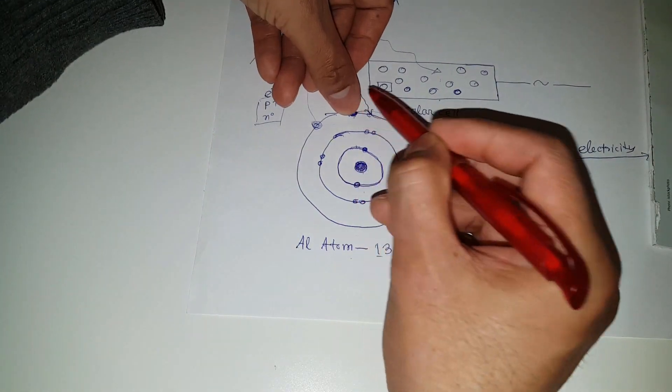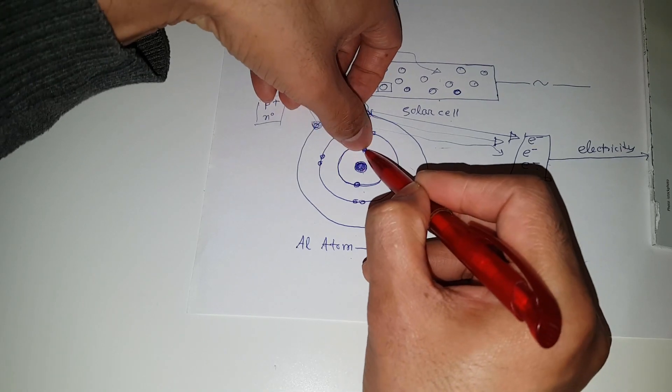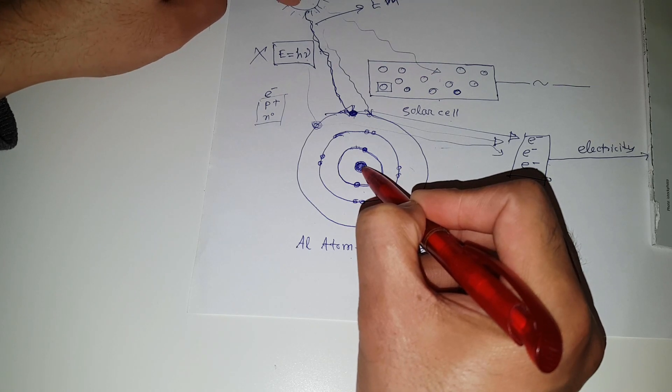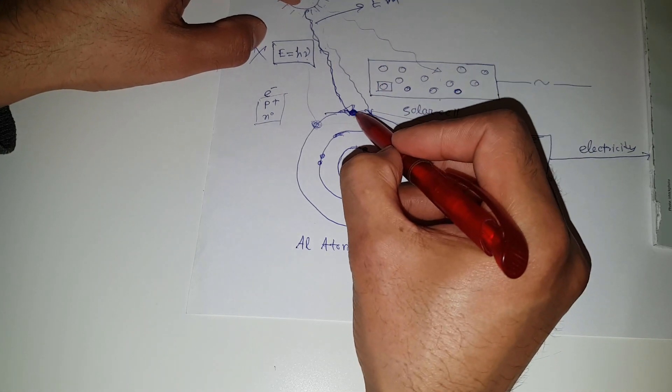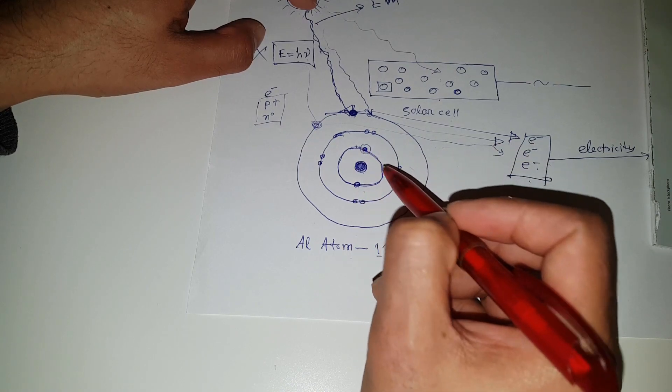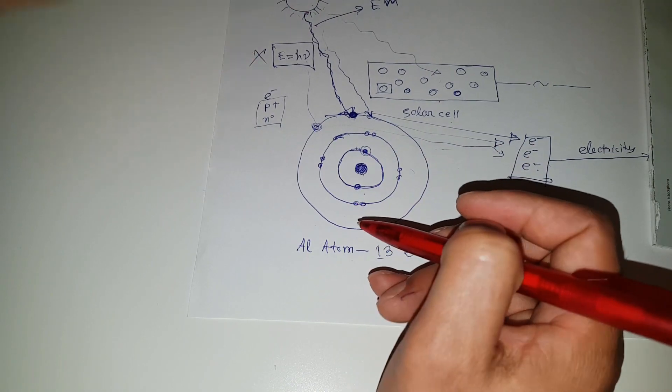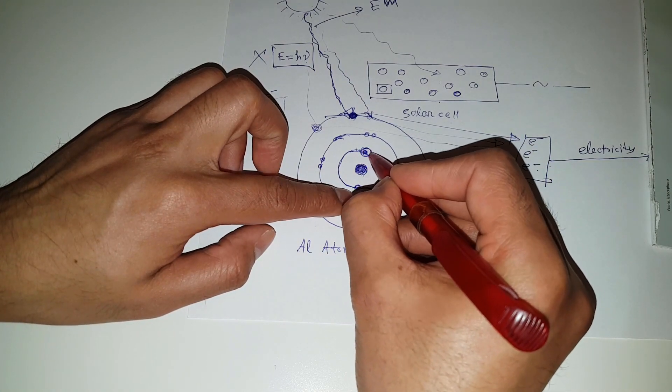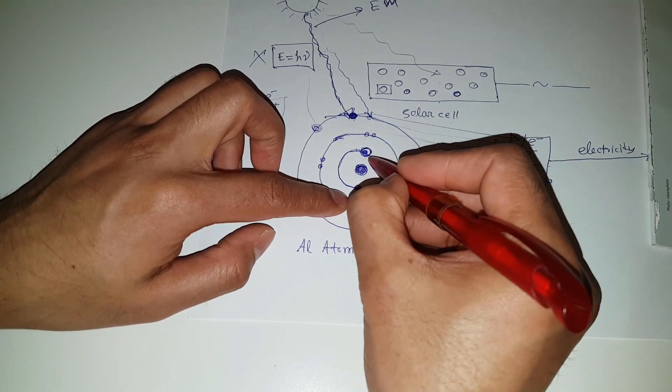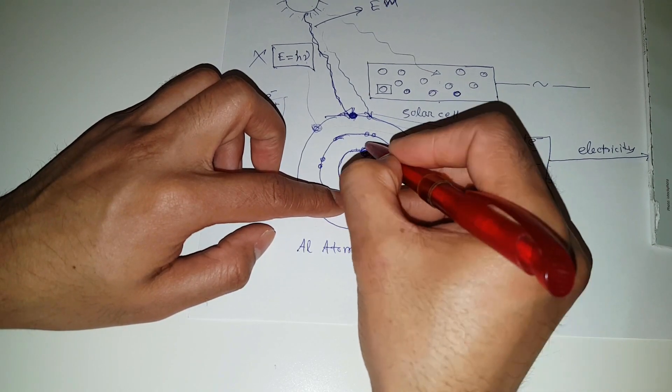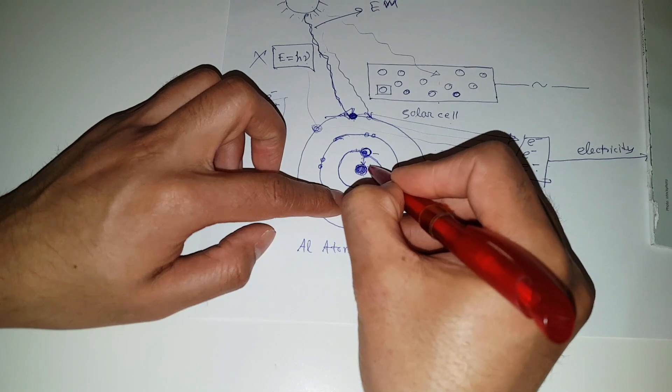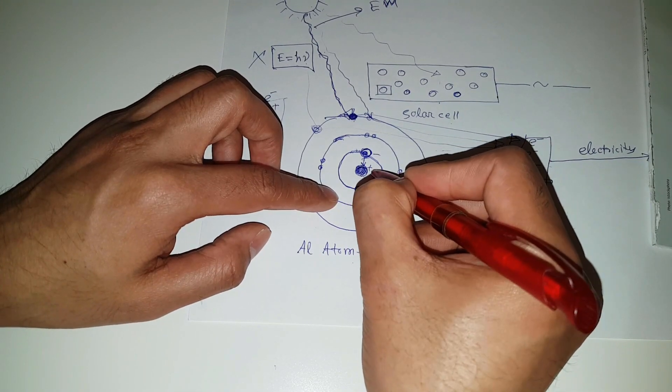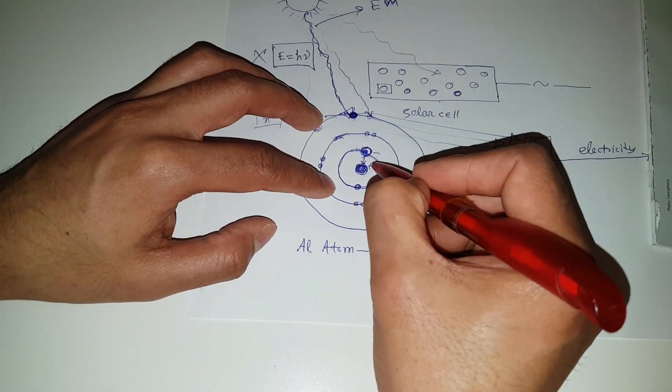This outermost electrons, they are loosely bonded with the nucleus. And these inner electrons, they are strongly bonded with the nucleus. You may ask the question, why does this solar power only kick out this outermost electron? Why are the innermost electrons not getting free of these atoms? Good question. These inner electrons, inside electrons, they are strongly bonded with this nucleus. You know, this is negatively charged electron. This is positively charged proton. And opposite charges attract each other, like a boy and a girl.